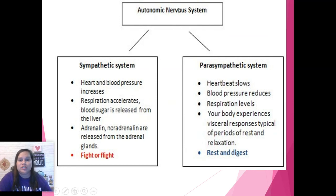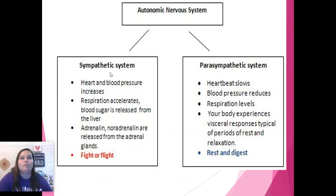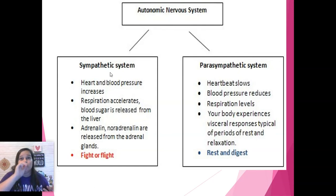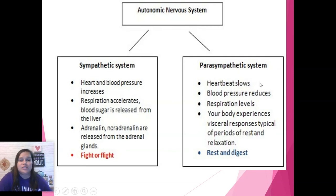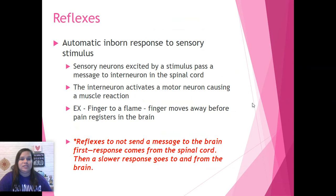To summarize: we have the autonomic nervous system, which is part of the peripheral nervous system. We have the sympathetic system — your body 'feeling sorry' for you when you're in danger, helping you take care of yourself — that's fight or flight. And then the parasympathetic is what slows us down and calms us down — that is rest and digest.